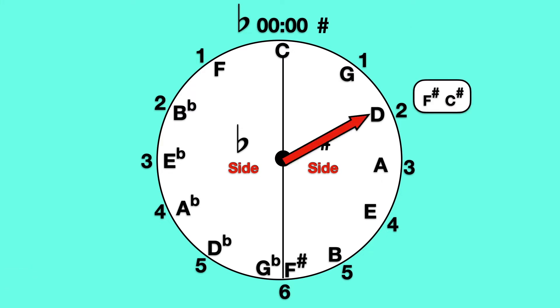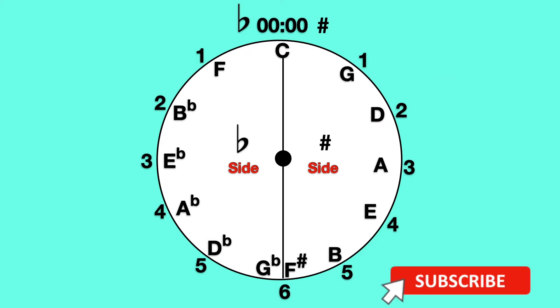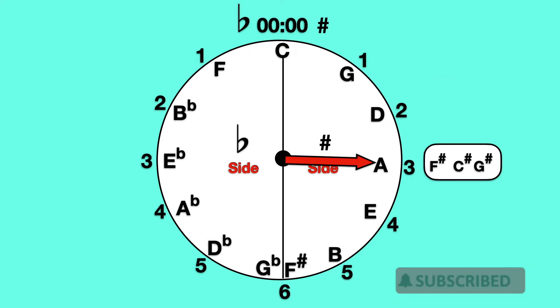D major has two sharps: F sharp and C sharp. A major has three sharps: F sharp, C sharp, and G sharp.